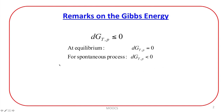So, most of the time when we say that for spontaneity of the process, let us take a look at the change in Gibbs free energy of the reaction. And if the change in Gibbs free energy of the reaction at constant temperature and pressure is less than 0, then the reaction is spontaneous in that direction.